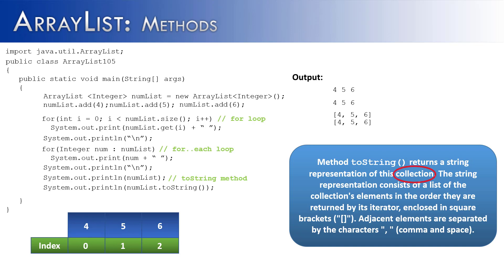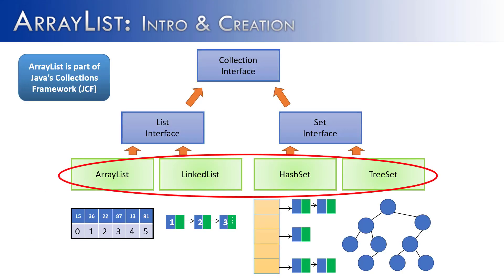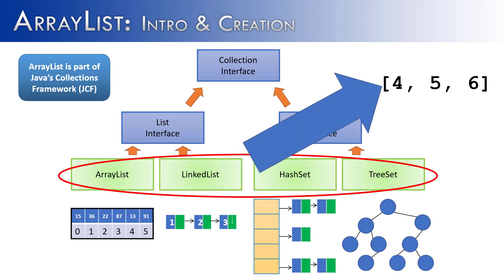One thing to notice is that in the definition of the toString method, it says it's a string representation of this collection. Don't forget that ArrayList is a collection. All of the implemented classes in the Java Collections framework are going to output in that same square bracket, element, comma, space format at the concrete level.